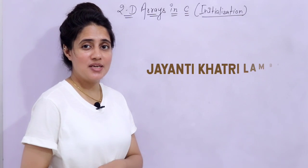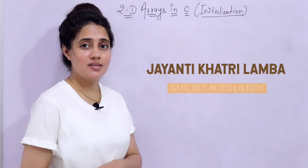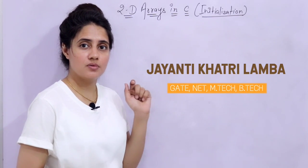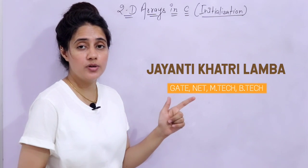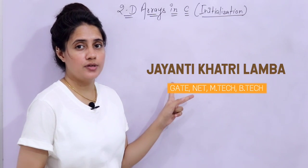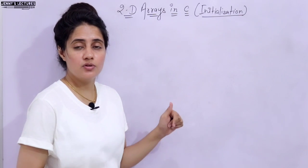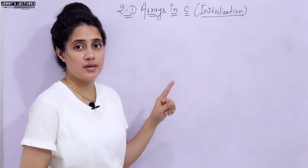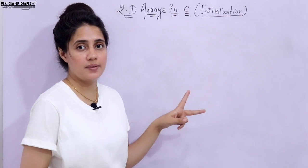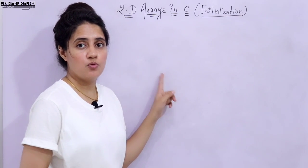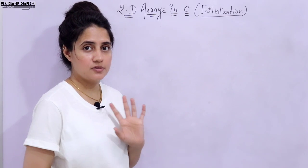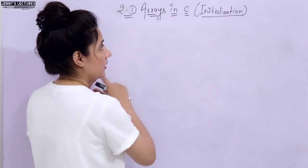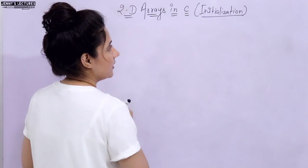In this series on learning programming in C, we are discussing 2D arrays. In the previous video, we covered the need for 2D arrays and their declaration. Now in this video, I will talk about initialization of 2D arrays — two types: at runtime and at compile time. Both will be shown with examples.